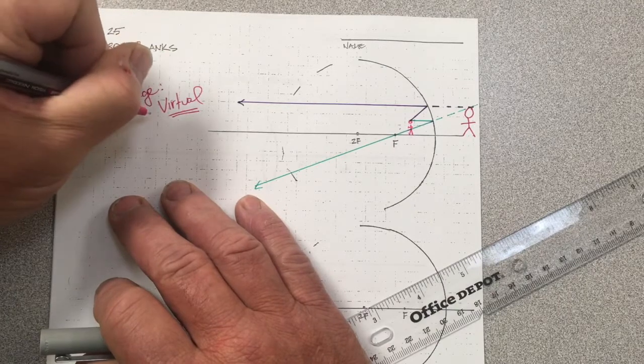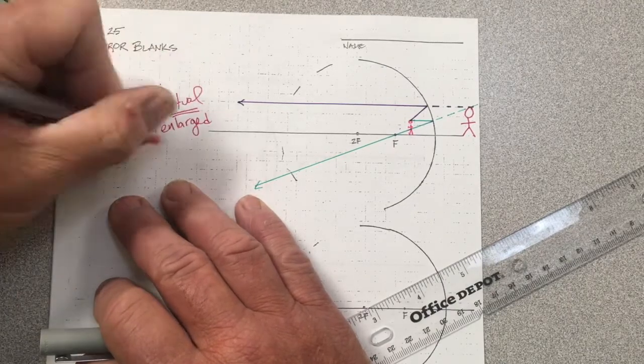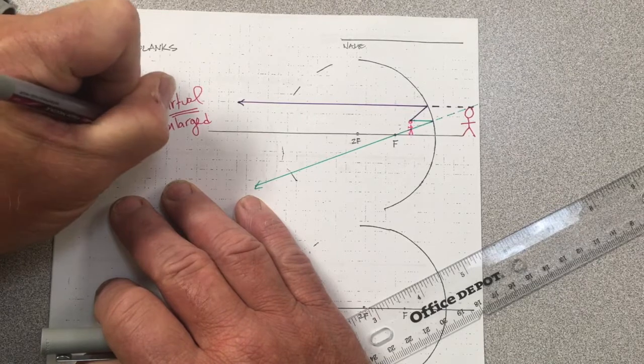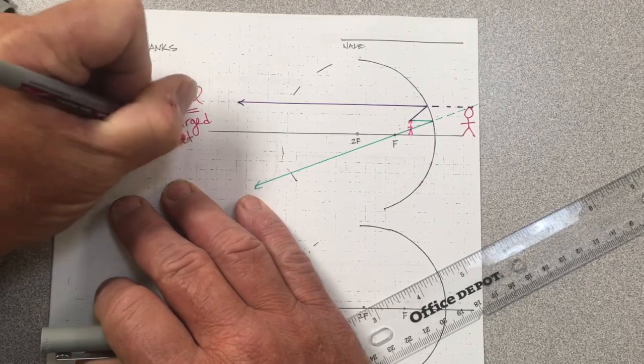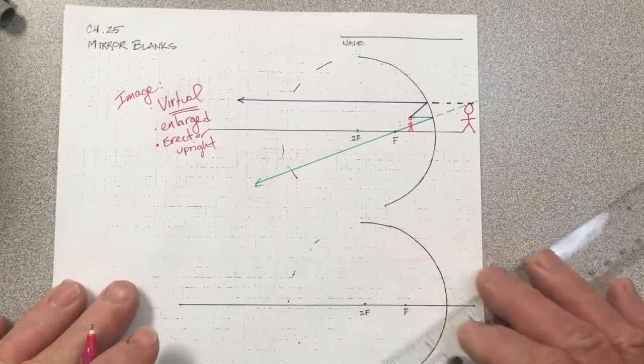It's a virtual image, it's enlarged, and it is not inverted. It is erect or upright. So that's really the concave mirror.